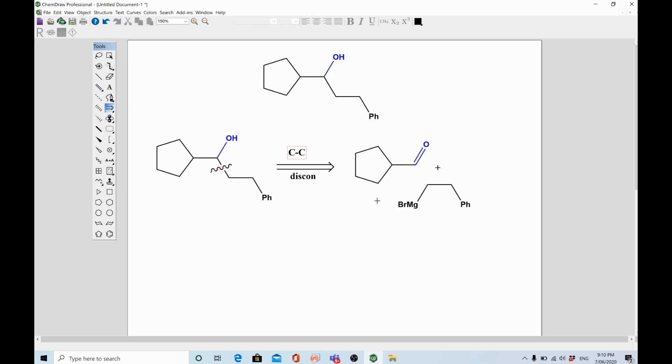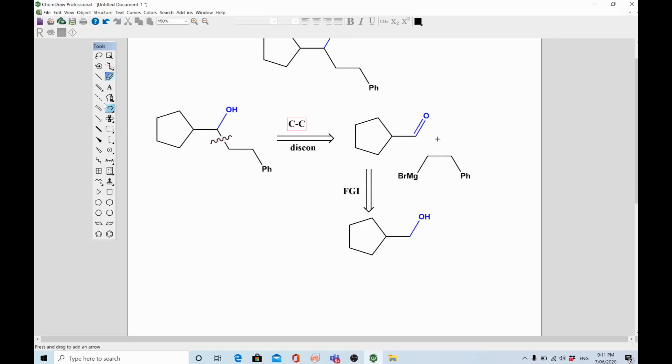Furthermore, you can do retrosynthetic analysis of this aldehyde by using a strategy in retrosynthetic analysis that is FGI, which means functional group interconversion. What I mean by this is you interchange one functional group into another. For example, this is aldehyde. We can do FGI to convert it into alcohol. Why? Because when we will do forward synthesis, we can oxidize alcohol using any suitable oxidizing agent to make it into aldehyde.